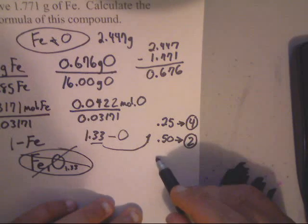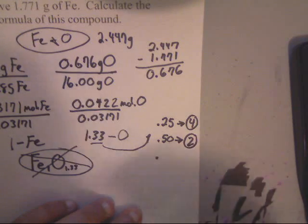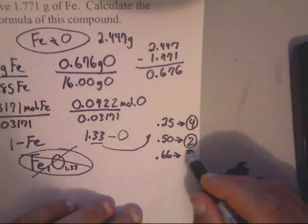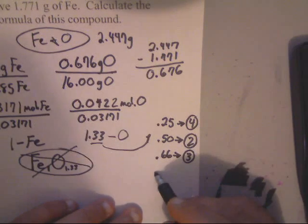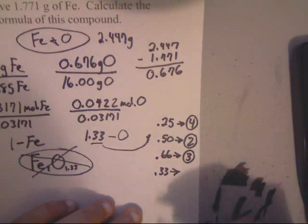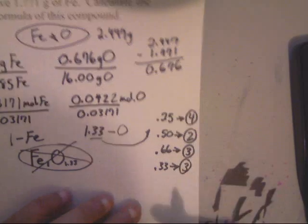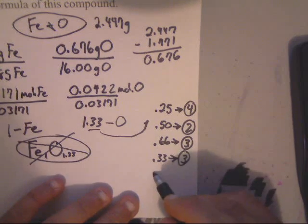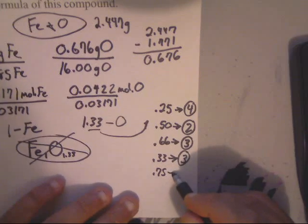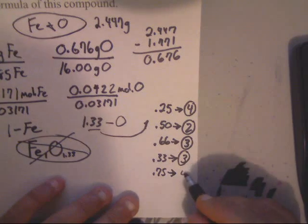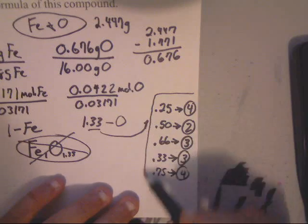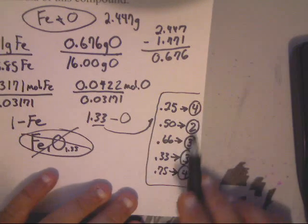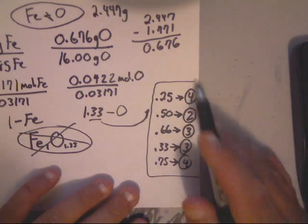If you see 0.66, multiply everything by 3. If you see 0.33, multiply everything by 3. If you see 0.75, multiply everything by 4. And these generally are the ones that you would see as a decimal. So if you see these numbers, multiply by these numbers. Make note of them, write them down.